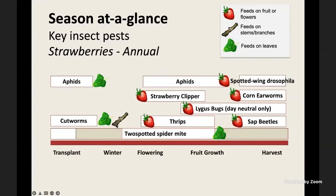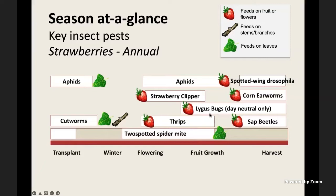Aphids are sucking pests and they suck primarily on the leaves. Moving into the later part of winter, two-spotted spider mites start and go all the way through flowering into the fruit growth period, feeding on foliage. Thrips feed on flowers for the most part during flowering until the initial fruit growth period. Strawberry clipper again feeds on flowers and sometimes smaller fruits. Aphids are also important at this time, then lygus bugs on day-neutral strawberries come into play starting with early fruit growth.